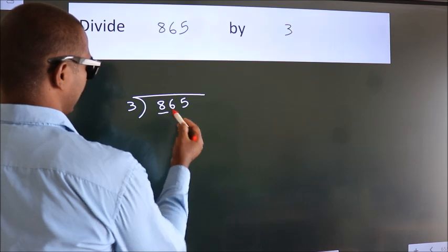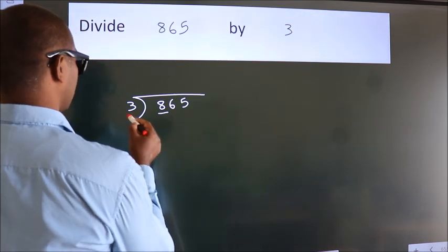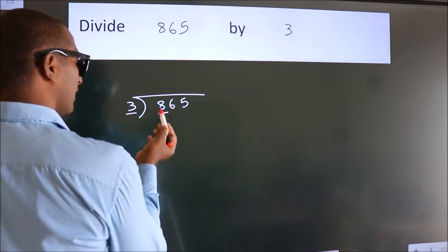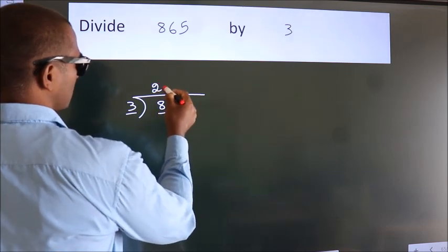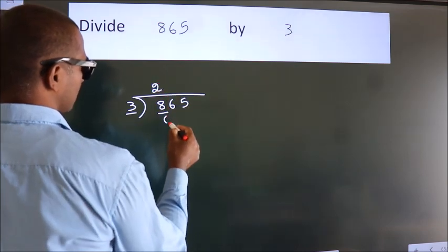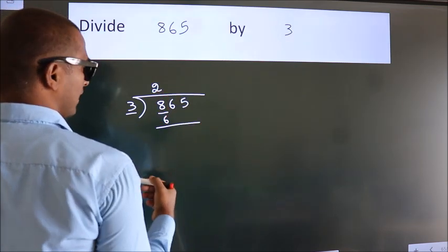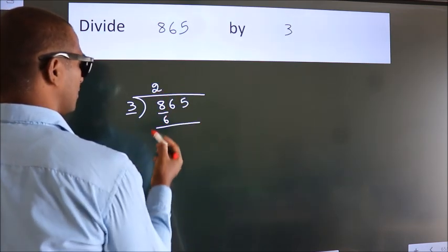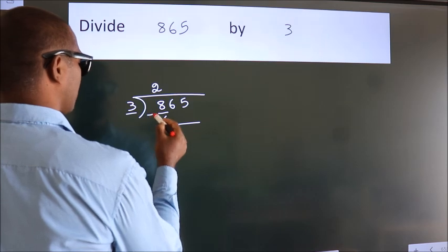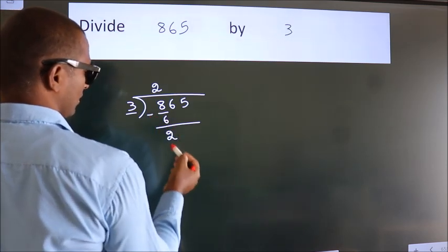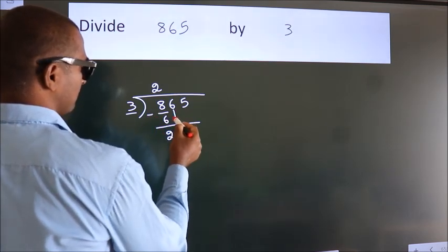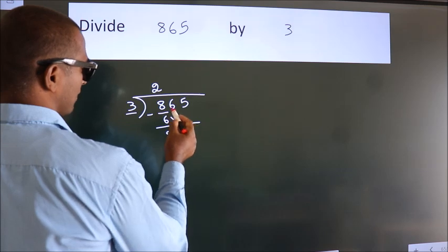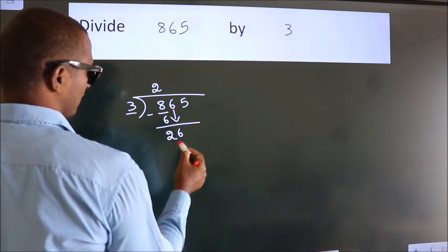Here we have 8, here 3. A number close to 8 in the 3 times table is 3 twos, which is 6. Now we should subtract. We get 2. After this, bring down the beside number. So 6 comes down.